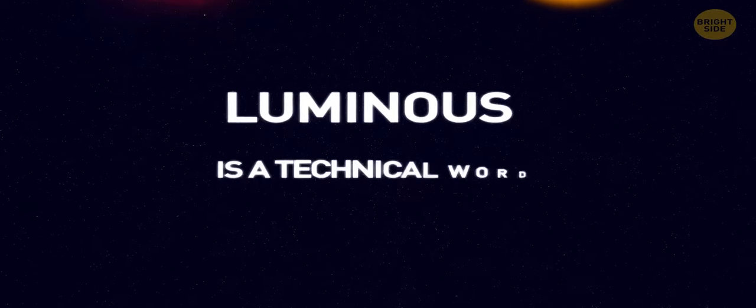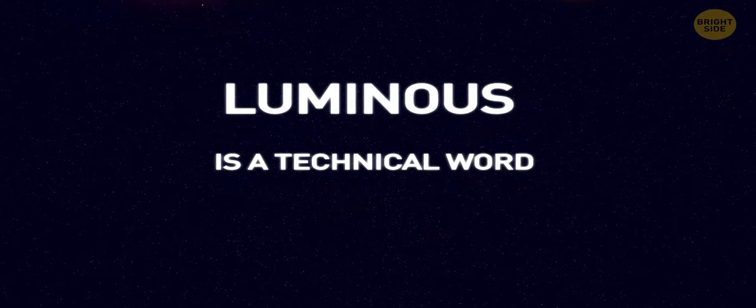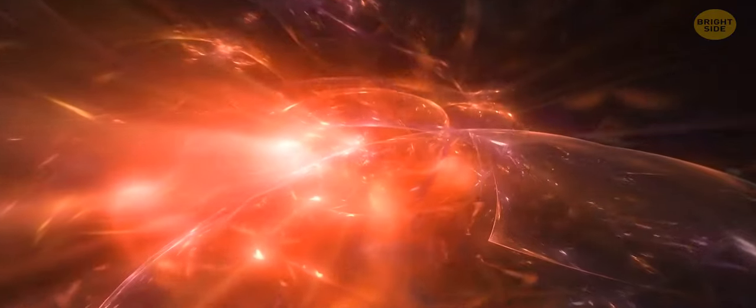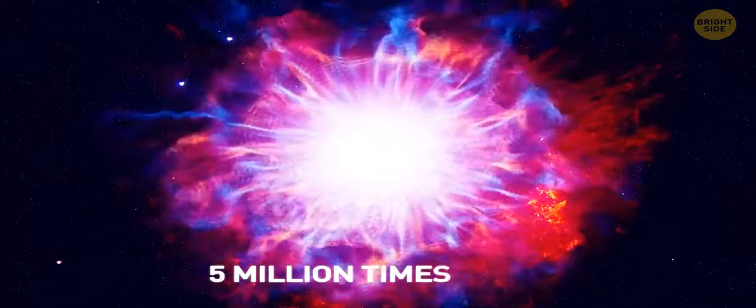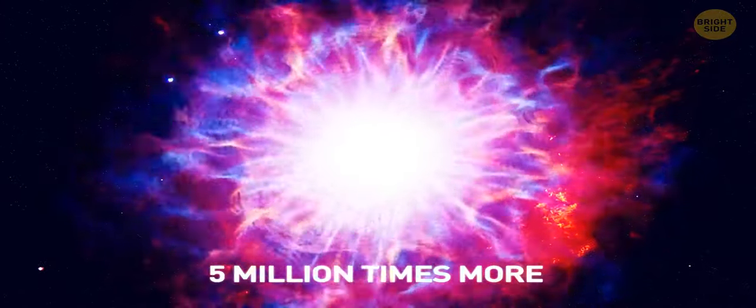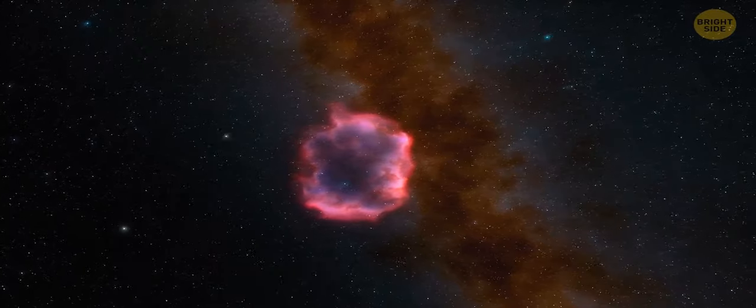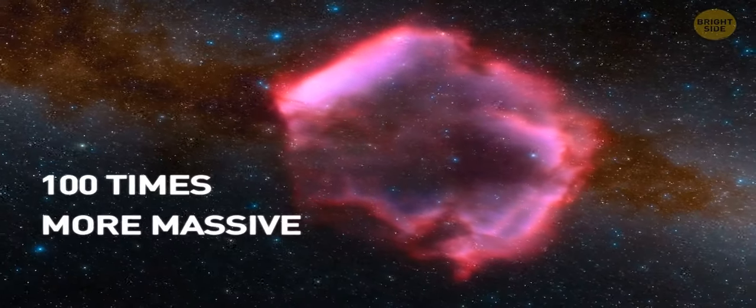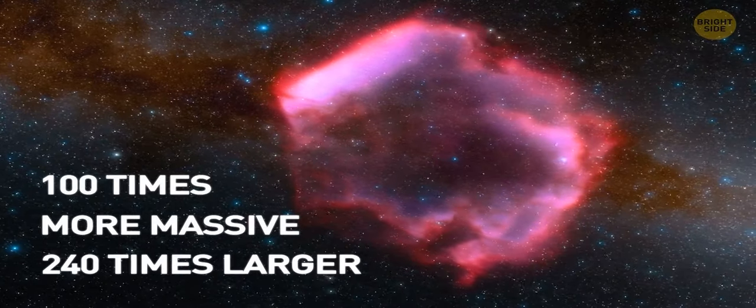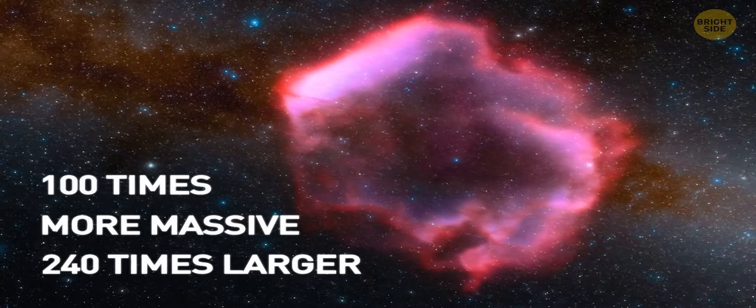Luminous is a technical word astronomers use. It doesn't just mean brightness. Luminosity refers to the total energy released at all frequencies. Eta Karinae releases 5 million times more energy than the sun. Truly one of the whoppers of the Milky Way, Eta Karinae is 100 times more massive and 240 times larger than our yellow-white dwarf sun, Sol.